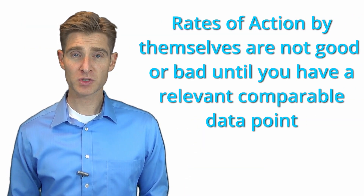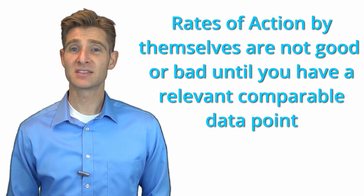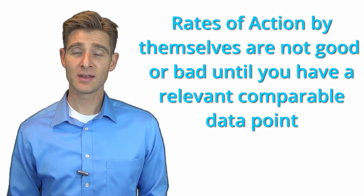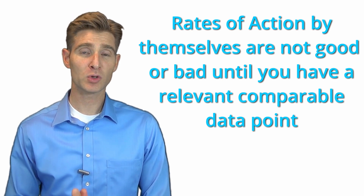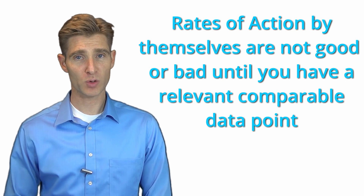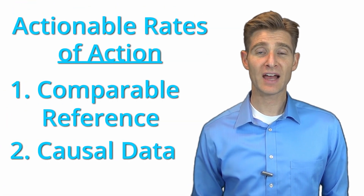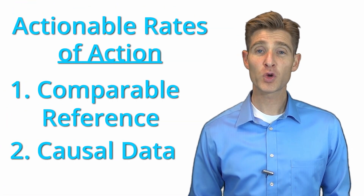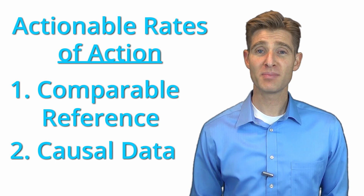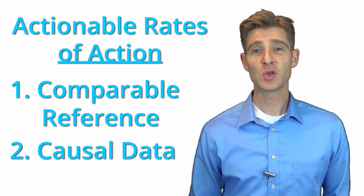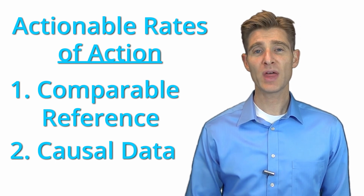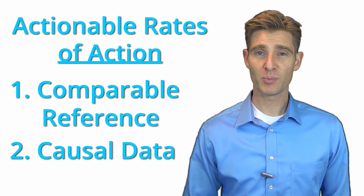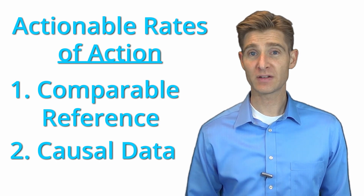So that's the first most important point: a rate of action is neither good nor bad, and you have to have a comparable data point to know if it is. The other thing you have to have is causal data. For your rates of action to matter at all, you have to have causal data showing how that rate is comparable to a different rate.